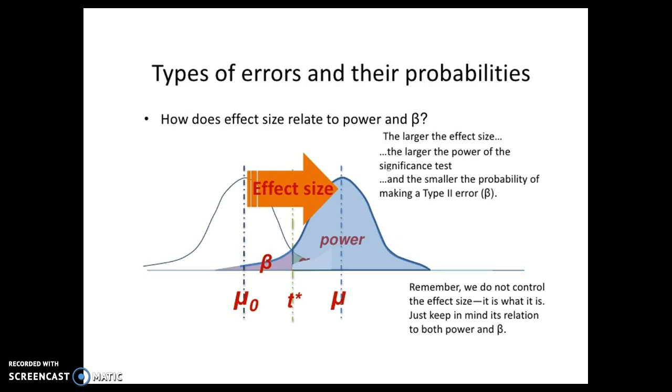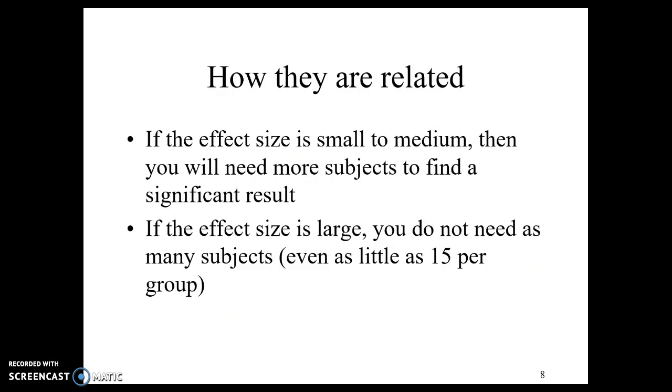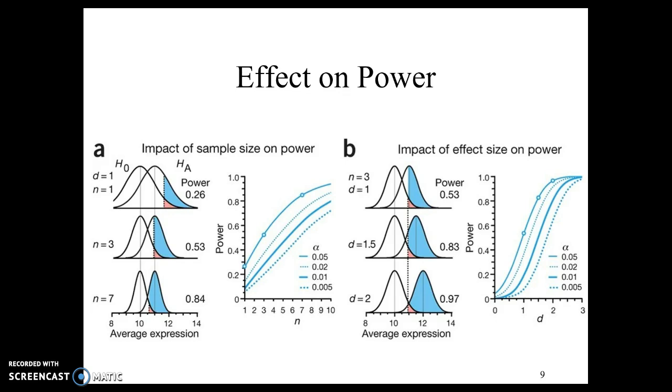We find this out a priori, meaning before the study, through the literature. What are typical effect sizes in this field when looking at these variables? You could also do a pilot if you're not sure. If the effect size is small to medium, then we have to have more subjects to find a significant result. It's really small, there is a significant difference but it's small, so we need a lot of people to fill in the gaps. Versus if the effect size is quite large, we don't need as many subjects because the difference is so big.